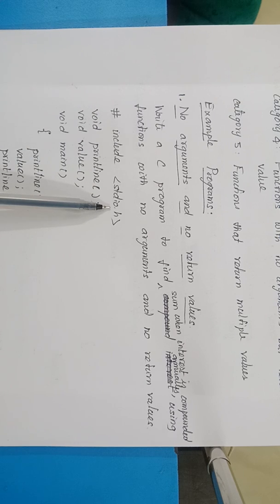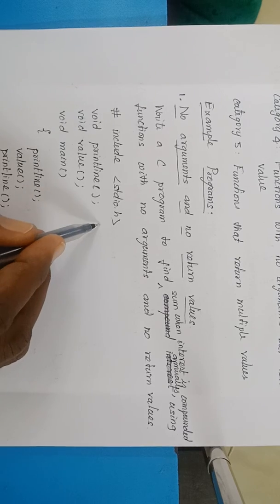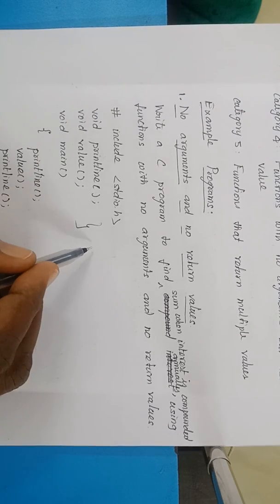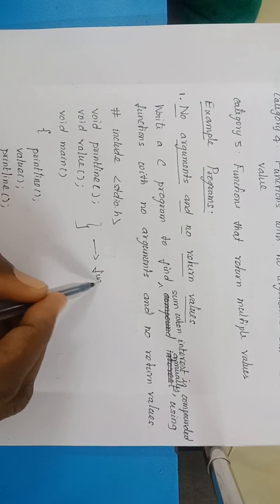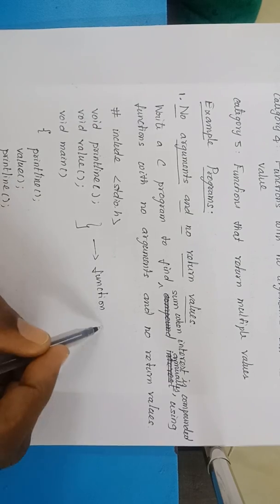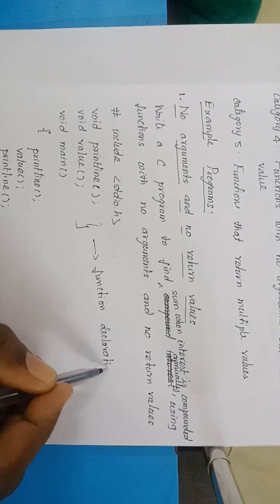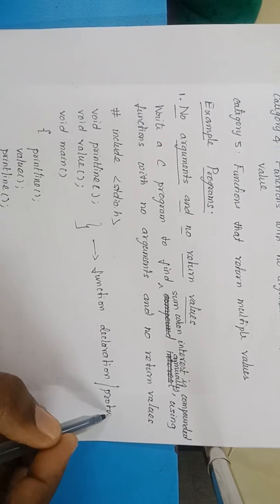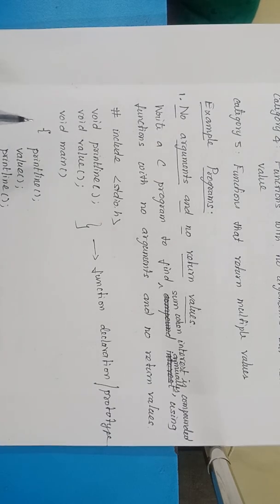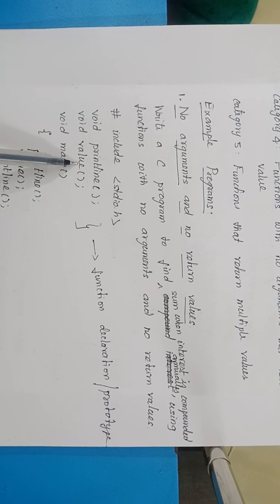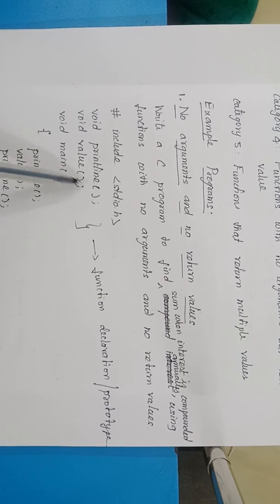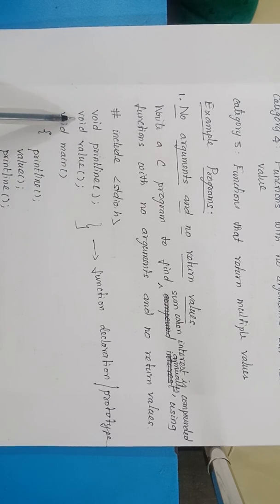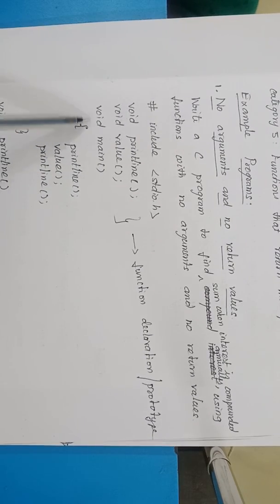We are including stdio.h, and these two are functions that we are going to use. This is called a function declaration, otherwise prototype. I am going to use two functions: one is print_line and another one is value. Both of them have no arguments and no return values. Coming to the main function, void main.